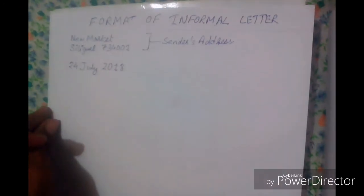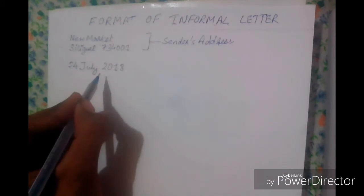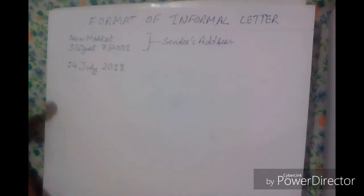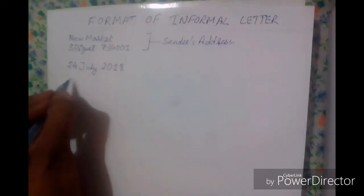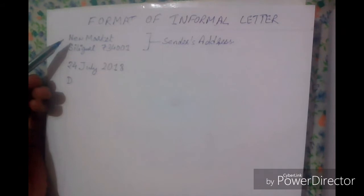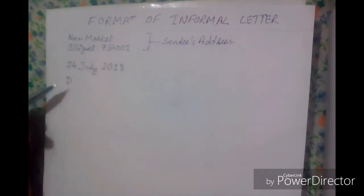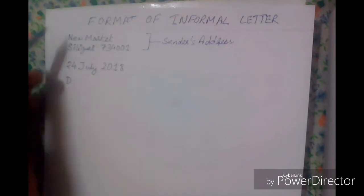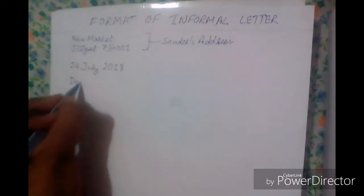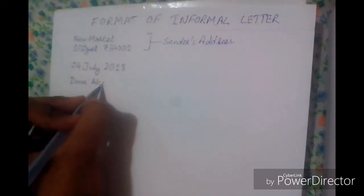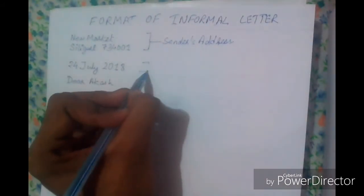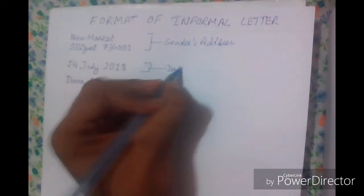Next, leave one line and write the salutation. Informal letters are usually written to friends, so here I'll write my friend's name. You can see that all my items — sender's address, date, and salutation — start at the same place, following a straight line. The salutation here is 'Dear Akash,' supposing my friend's name is Akash.